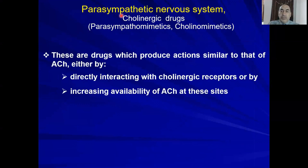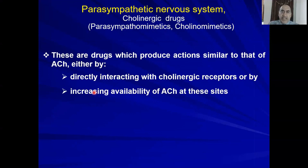Now we need to talk about drugs — pharmacology. Cholinergic drugs are called parasympathomimetics or cholinomimetics. They either act directly by activating the receptor, or indirectly by inhibiting the acetylcholinesterase enzyme that breaks down acetylcholine, thereby augmenting the amount of acetylcholine at receptor sites. These are called indirect parasympathomimetics.